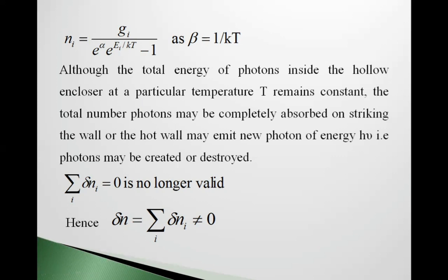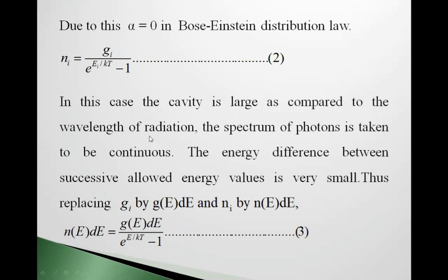Total energy of photons inside the hollow enclosure at particular temperature T remains constant. Total number of photons may be completely absorbed by striking the walls of that cavity or the hot wall may emit new photon of energy h nu. That is, photons may be created or destroyed. Summation i dNi equals 0 is no longer valid. Hence, delta n equals summation i dNi not equal to 0. Now, put alpha equals 0 in Bose-Einstein distribution law. We get ni equals gi upon e raised to Ei upon kt minus 1, equation 2.